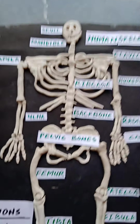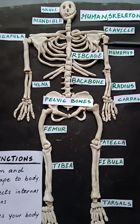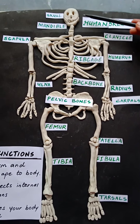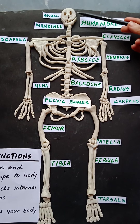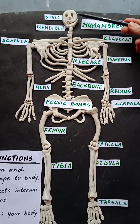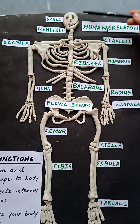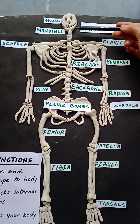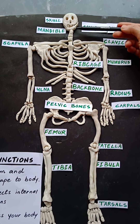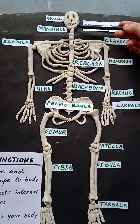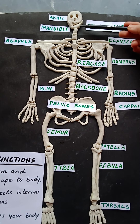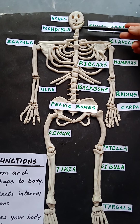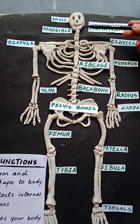Now let's get started with some important bones. I will start from the top. The first one you can see is the skull. The skull protects the brain. This upper portion is fixed, but this portion which is called the mandible is not a fixed bone — it can move. That is why you are able to chew your food and speak with the help of this bone.